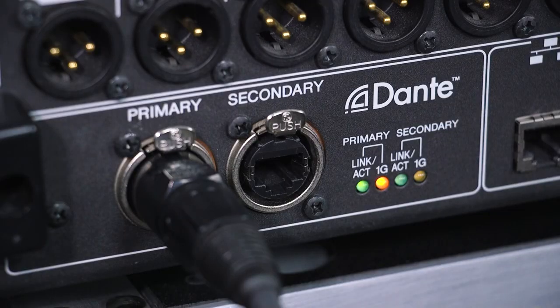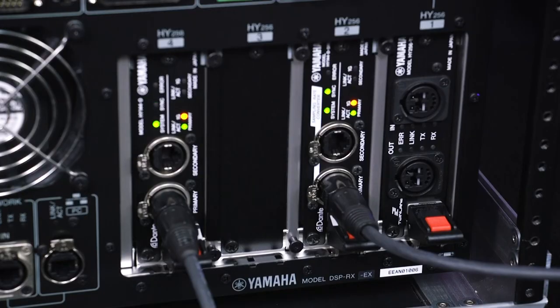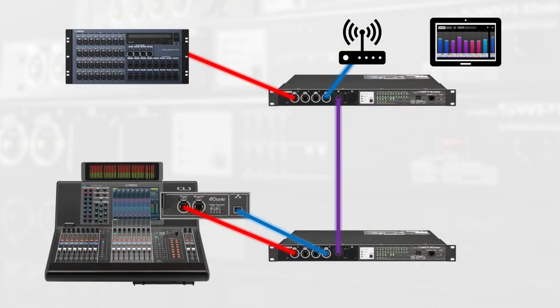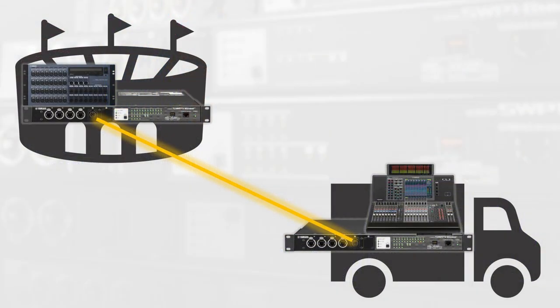Some Dante devices will have additional network ports for control data. Yamaha mixers such as the TF series, QL and CL series, as well as RIVAGE PM systems, are good examples. Using a switch allows all the data to be carried through the same infrastructure to different destinations. Sometimes the distance between two Dante devices will be over 100 meters — the limit for copper-based network cables. In that case, switches can be used to transmit data through fiber-optic links covering much greater distances, up to 10 kilometers. So that's five good reasons to use a network switch.